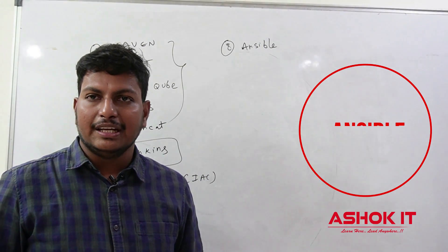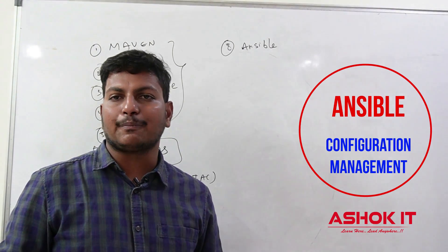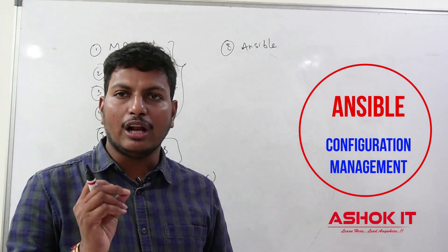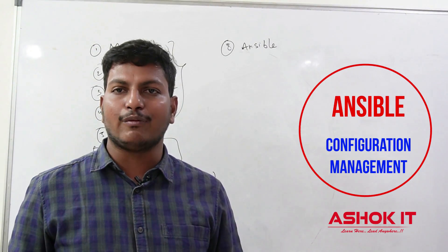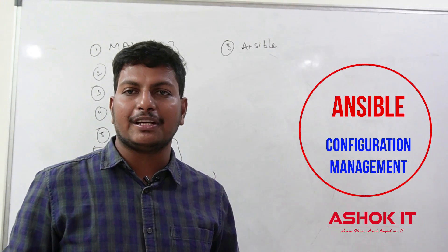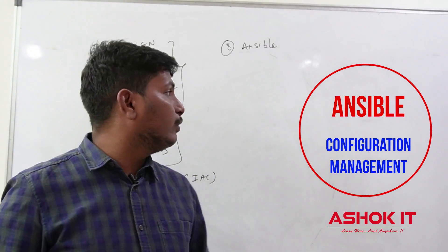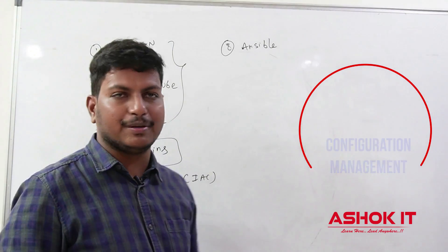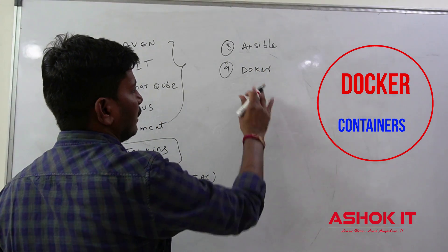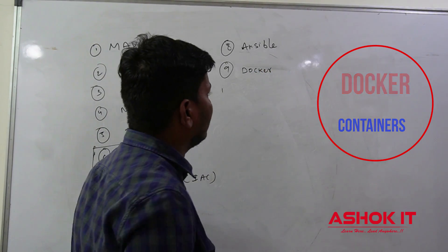Next one is Ansible. Ansible is called configuration management software. Let's assume that in our project we are having 100 machines to maintain the infrastructure of our application. In all 100 machines, I want to do OS patching, or install some software, or uninstall some software. Doing that operation manually is very difficult and time-consuming. That kind of manual work we can automate by using Ansible. It is called configuration management software. And the next one, the most important part for DevOps operations, Docker. Docker we are going to use as a containerization platform in order to run our applications as containers.